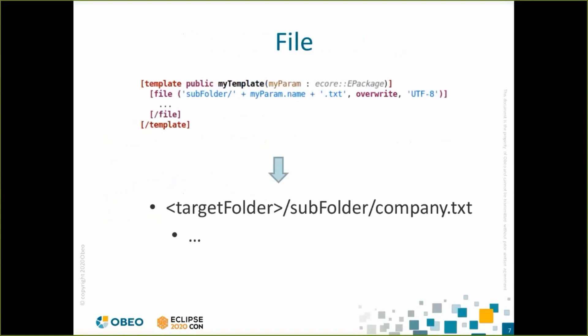A template can contain a list of statements. The first statement you probably want to use is the file statement. It allows you to create files at a given location. The file can be created in two ways: overwrite mode, which will create the file if it doesn't exist or overwrite it if it does; or create mode, which will only generate the content of the file if it doesn't exist. You can also specify the encoding of the output file.